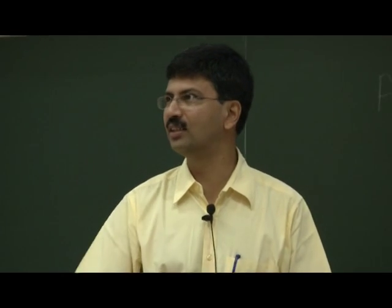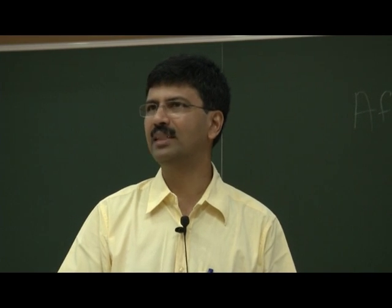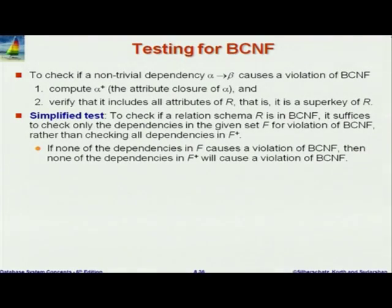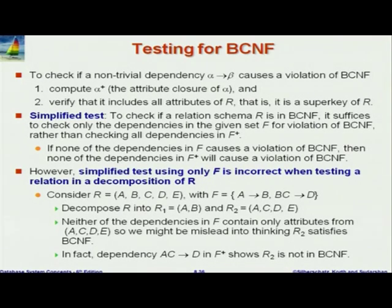It's correct, actually, as far as this goes. The problem which happens is: what if you decompose R? Then how do you check for violation of BCNF for the decomposed relations? So if I decompose R, then I look at a particular relation in the decomposition. Supposing I try to apply this test — I'll take the given set of dependencies F, and on that particular relation R in the decomposition, I will apply this test: compute alpha+, and see if it's the super key or not.